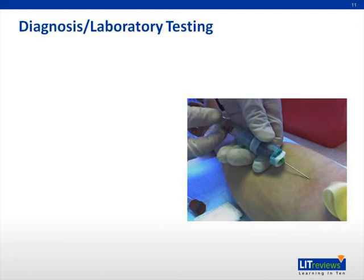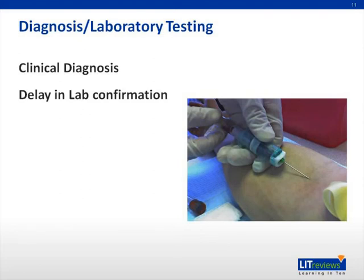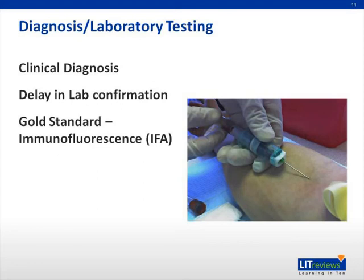While serological testing is available to detect Rickettsia rickettsii, on initial presentation this is a clinical diagnosis due to significant delay in laboratory confirmation. Indirect immunofluorescence assay is the gold standard for this infection with 94% sensitivity; however, it requires a convalescent serum obtained at least 4 to 6 weeks after the acute phase of infection. The test compares antibody titers from the initial phase to the convalescent phase. Delaying treatment until convalescent serum is available could result in significant morbidity and even death — do not rely on these tests and do not delay treatment.